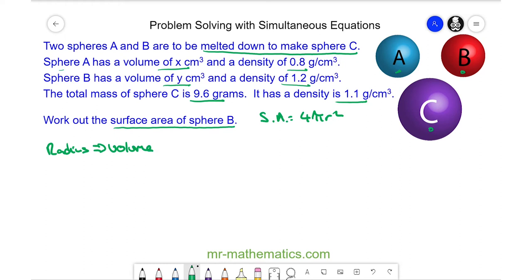The volume of sphere B is Y cm³, so we need to work out the value of Y. To do this, I'm going to use simultaneous equations with this information.